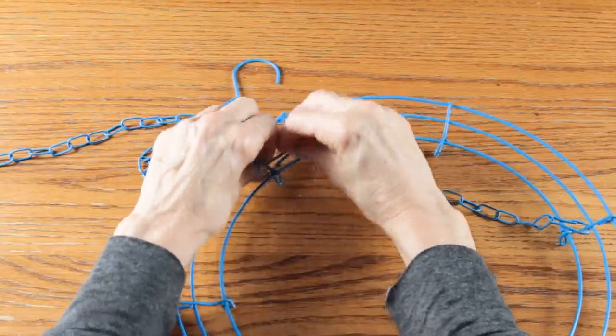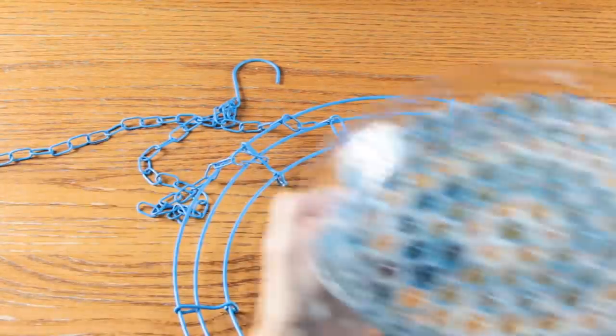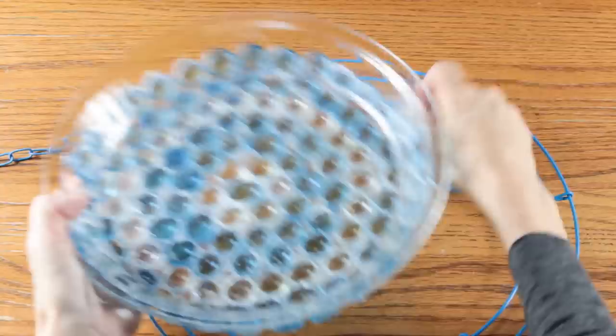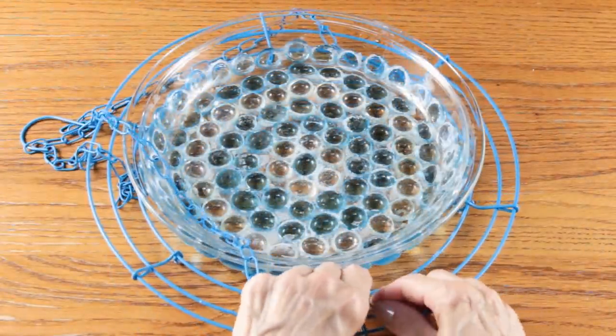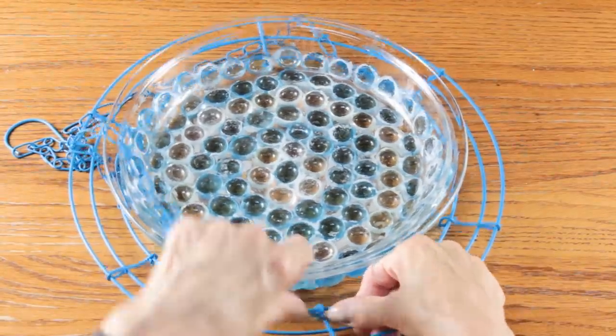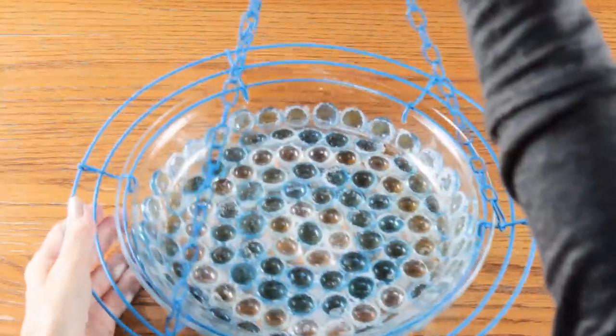Once you attach the first two chains, you're then going to slide your little glass basin in between the metal form. Then just attach the last chain and you are done.